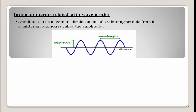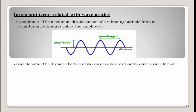The next important term related to wave motion is wavelength. Wavelength is the distance between two successive crests or two successive troughs.